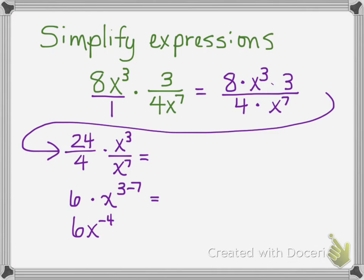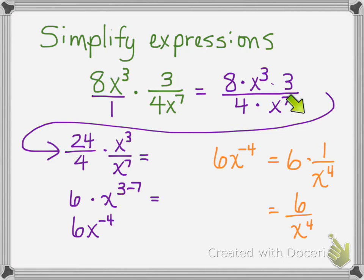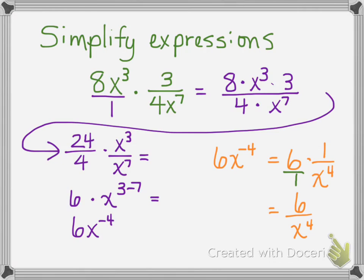Sometimes problems will ask you to write these expressions with a positive exponent. We learned in Lesson 5 that the negative exponent is the reciprocal. So x to the negative 4 becomes 1 over x to the fourth. We still have the 6 out front, so I can leave this as 6 times 1 over x to the fourth. Really what I'm doing is thinking of this as 6 over 1 times 1 over x to the fourth and multiplying across, so I get 6 divided by x to the fourth.